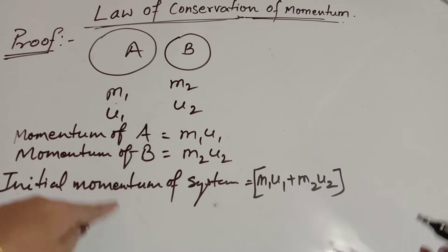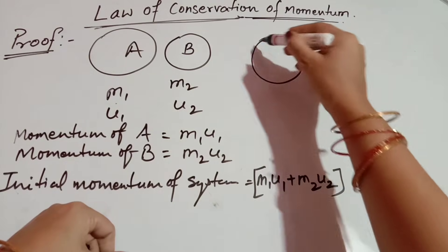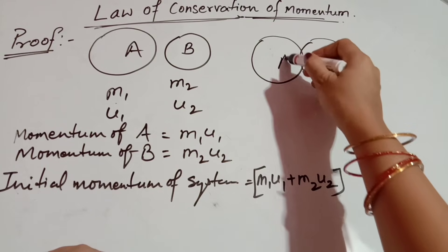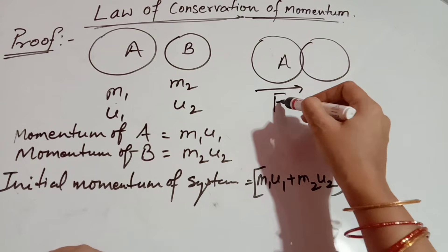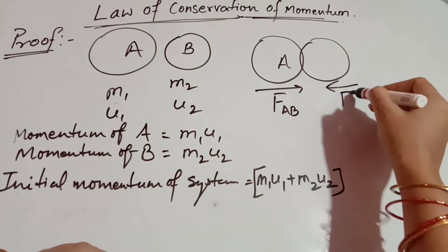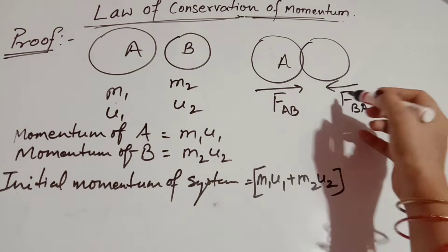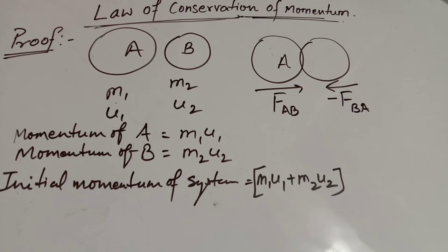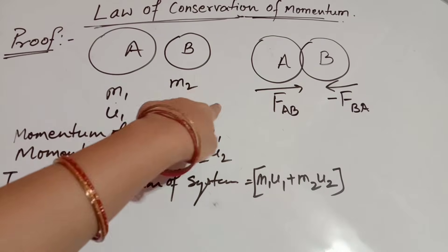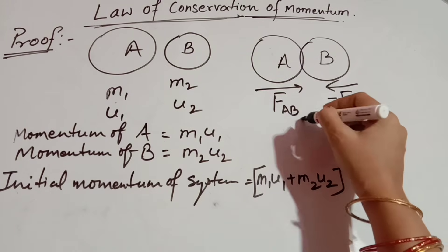Now we consider that both objects collide with each other — object A collides with object B. At collision, object A applies a force FAB, and object B also applies a force FBA. We know this is an action-reaction force, so the direction is opposite and the magnitudes are equal. Both forces are equal and in opposite directions.